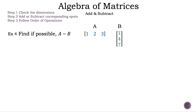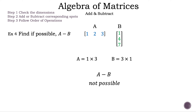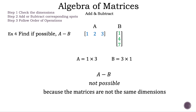Now let's move on to example 4. Find, if possible, A minus B, where matrix A is a 1 by 3 matrix with 1, 2, and 3 in row 1, and matrix B is a 3 by 1 matrix with 1 in row 1, 4 in row 2, and 7 in row 3. A minus B is not possible because the matrices are not the same dimensions. So 'not possible' is the answer for example 4.